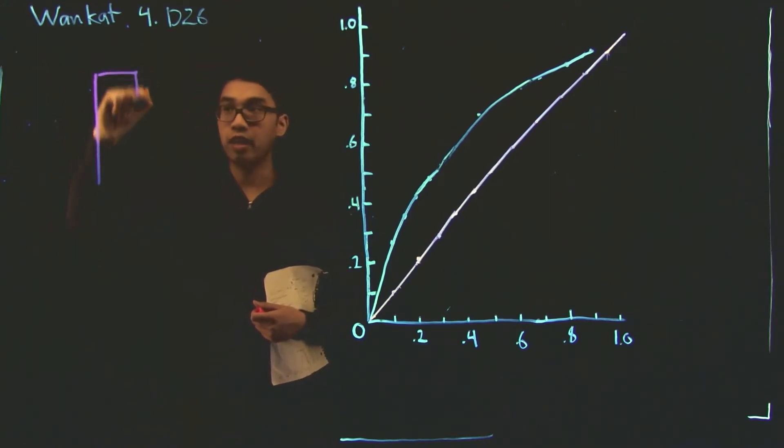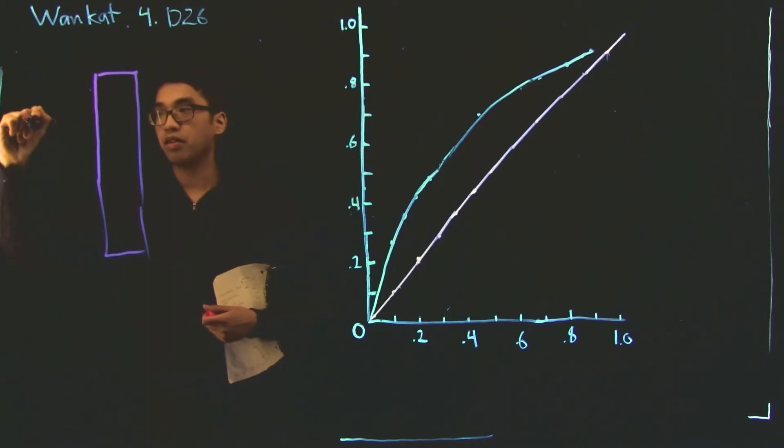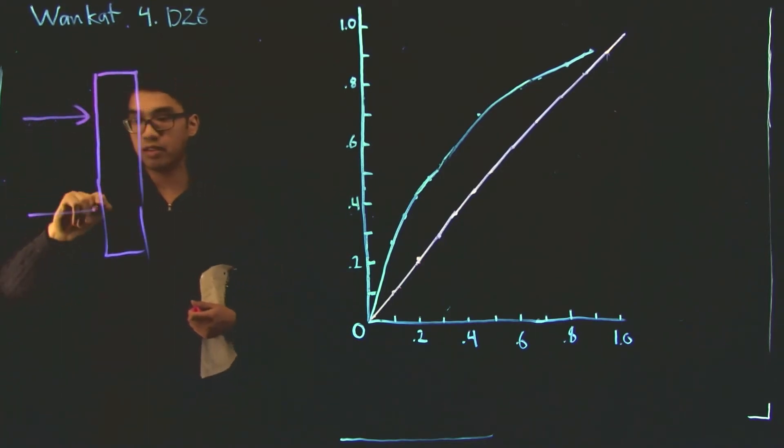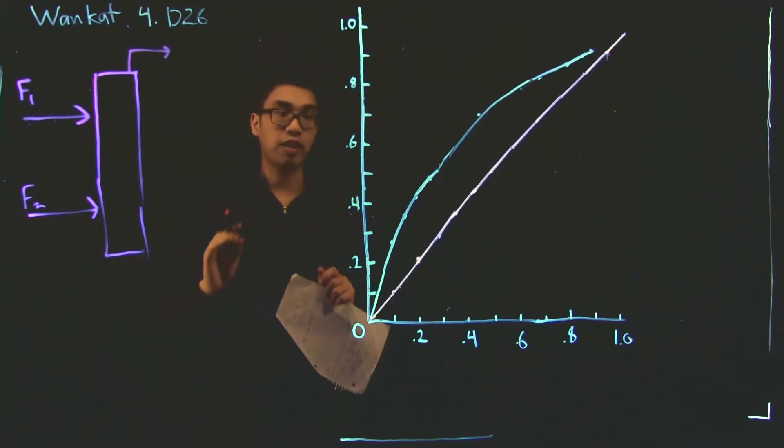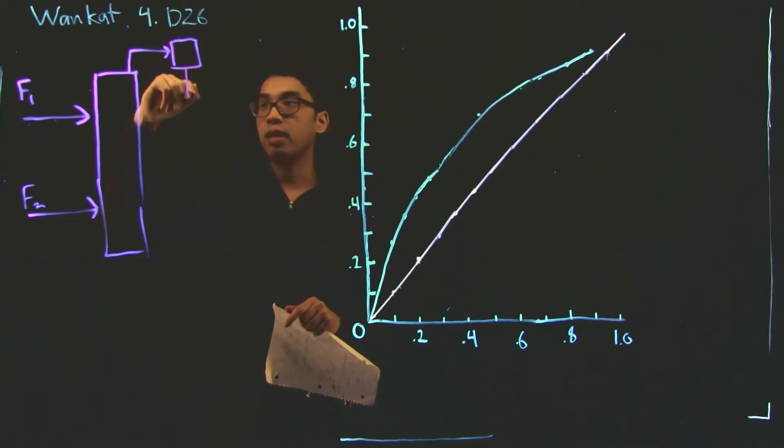This distillation column has two feeds. So we have feed one, and we have the second feed. And now we also have the distillate. And what's interesting here is typically you have a total condenser and a partial reboiler. But in this problem, we have a partial condenser and a total reboiler. So here, all the vapor goes in through the condenser, and some of it is sent back to the column. And the rest comes out as distillate.